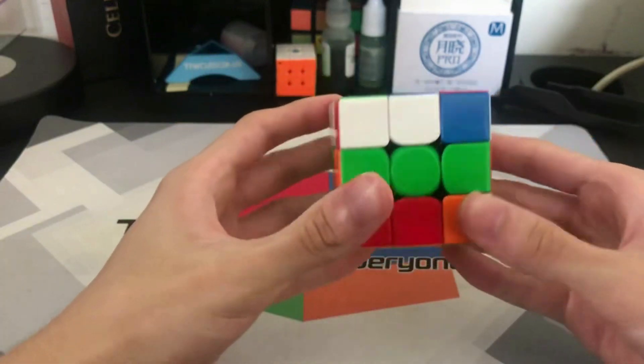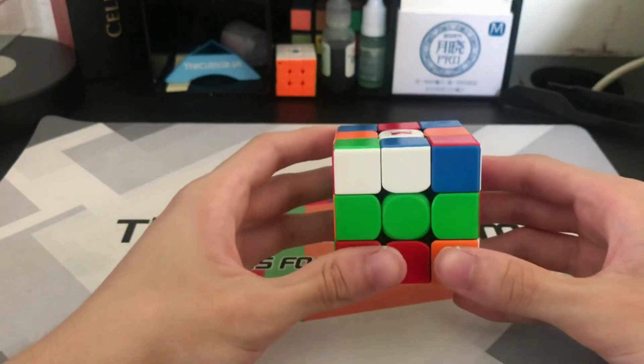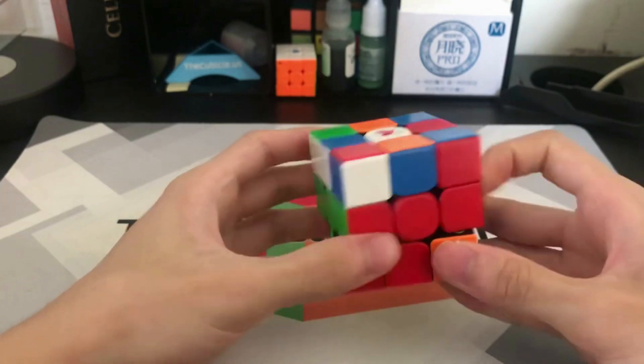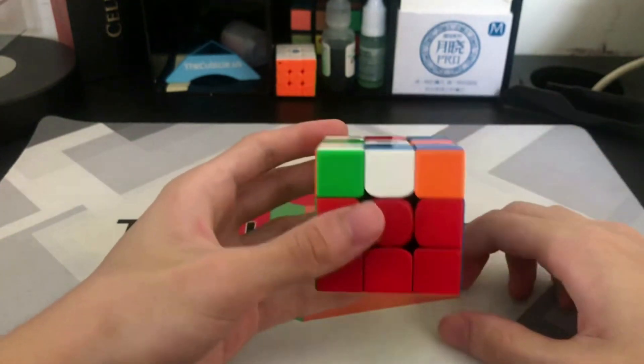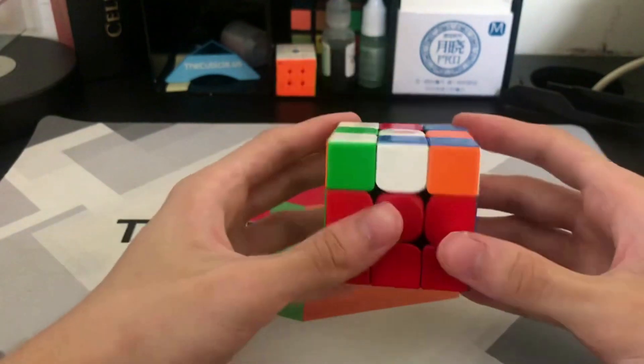A 4 move pseudo XXX cross - 11 moves for the entire F2L.